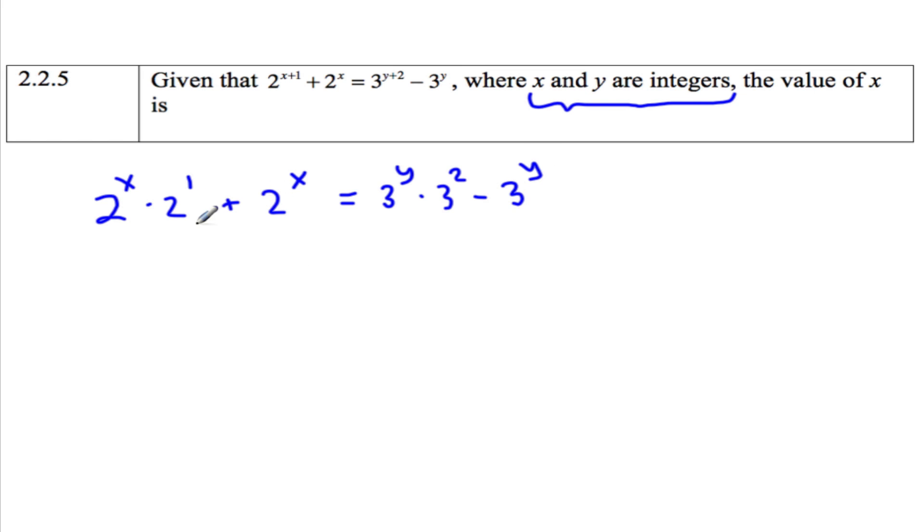Now ask yourself, how many 2 to the x's do I have? Well this one is 2, and this one has a 1. So that's 3 times 2 to the x equals how many 3 to the y's do I have? Well this is 9, and then it says to take away one of them. So that's 8 times 3 to the y.